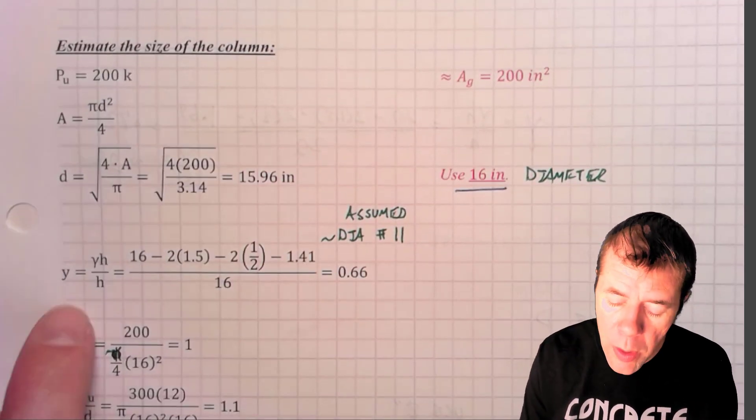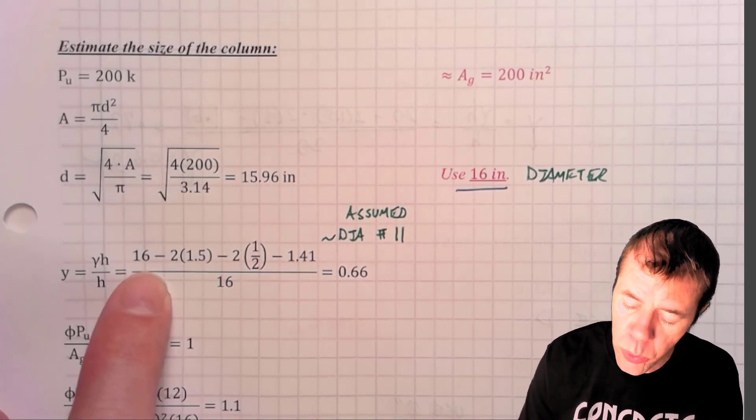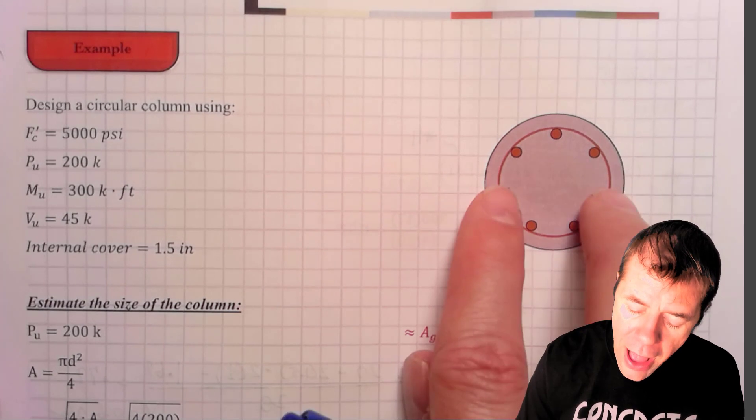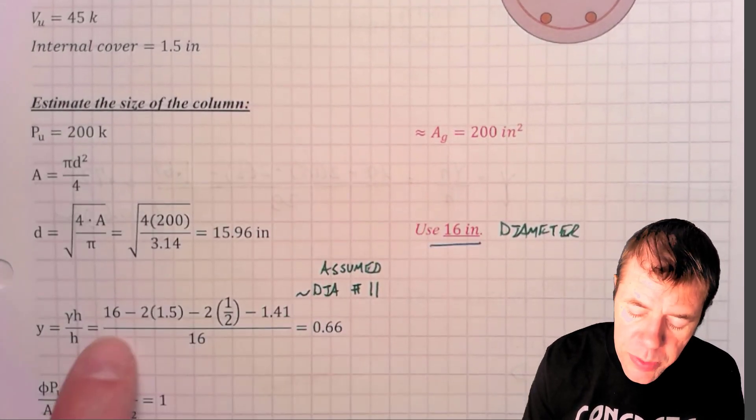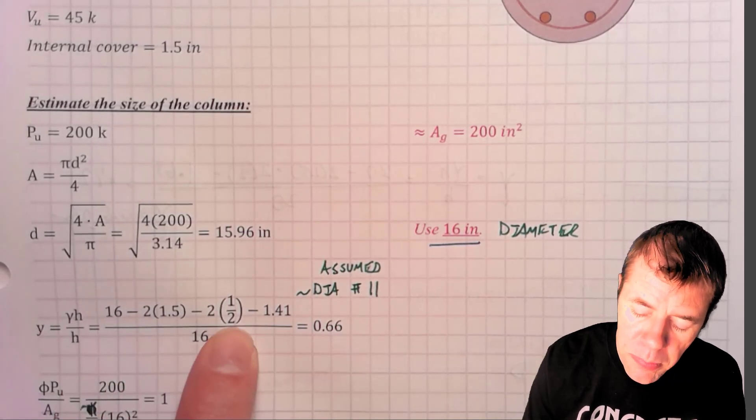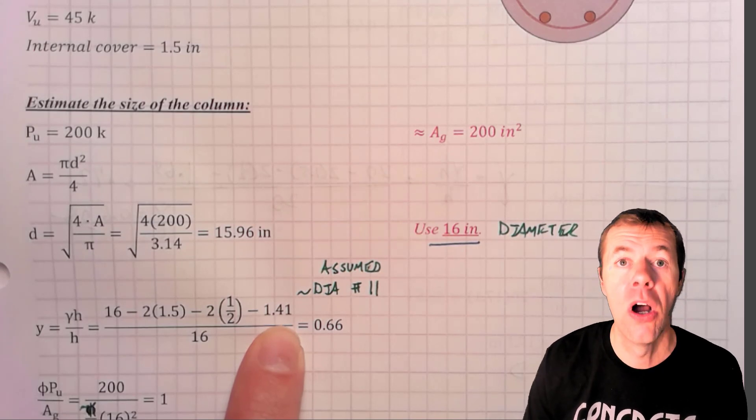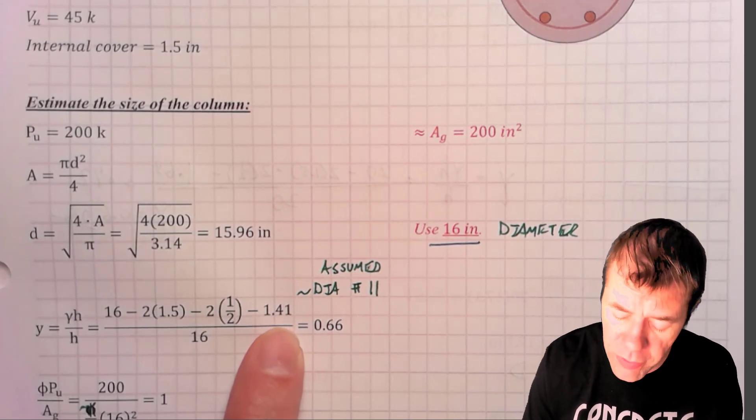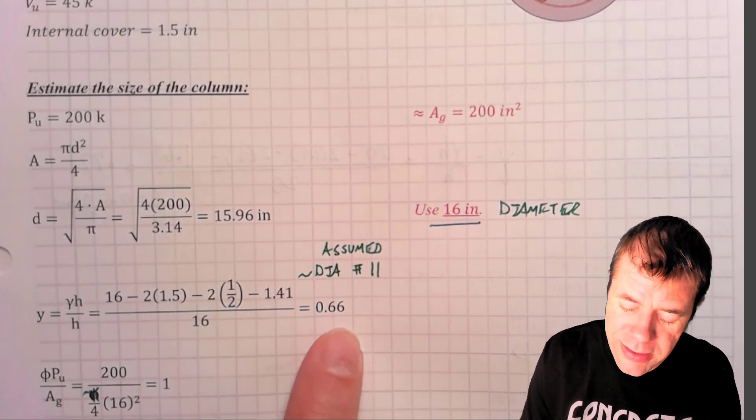Now, I have to solve for what my gamma is. This is the center-to-center dimension between my steel, and this is the total diameter of my column. Solving for this would be 16 would be my height, minus two covers, minus two stirrups, minus a half a number 11 bar on one side, and a half a number 11 bar on the other side. I'm assuming a number 11. All that divided by h, I get a gamma of 0.66.